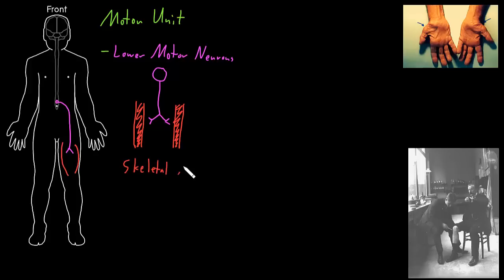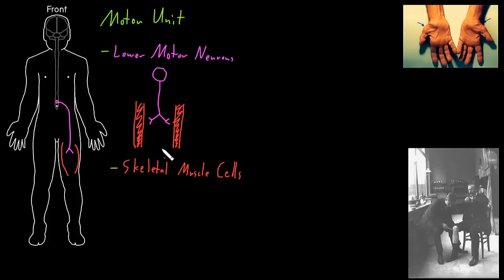These skeletal muscle cells are the other part of the motor unit. So the motor unit is one lower motor neuron and all the skeletal muscle cells that it contacts and controls. The place where a neuron contacts its target cell is called a synapse.